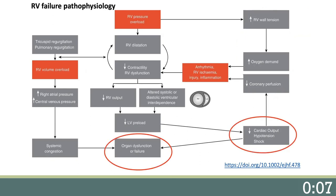Shock. Because of the combination of lower mean arterial pressure and high central venous pressures, there is further coronary ischemia and end-organ damage, causing AKI, liver failure, and intestinal ischemia.